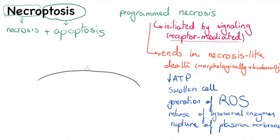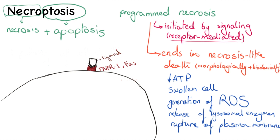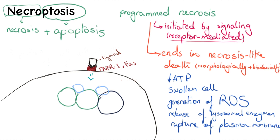Here we have receptor-ligand coupling. TNFR1 and FAS ligation are two very good examples, but there are also several other signals that can activate necroptosis. Once the ligand attaches to the receptor, two unique receptor-associated kinases called RIP1 and RIP3 are recruited into a complex.